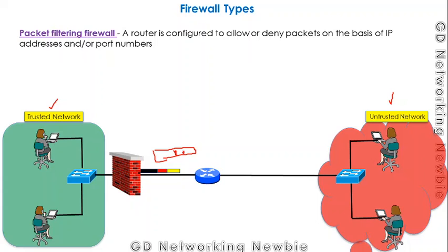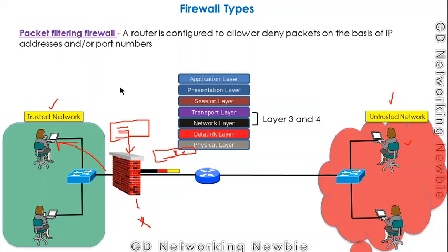The firewall has an ACL — access control list — and based on the entries in this ACL, it checks whether the traffic is legitimate or coming from a legal user. On that basis, the firewall can allow the packet to reach its destination or block it. The decision is made on the basis of IP addresses and port numbers. This means packet filtering firewalls work at Layer 3 (IP addresses) and Layer 4 (port numbers).